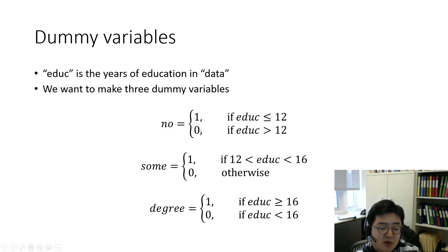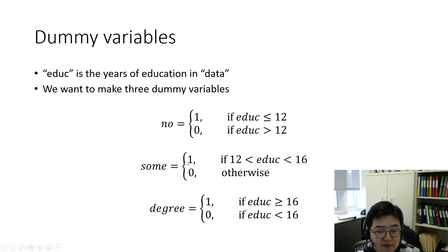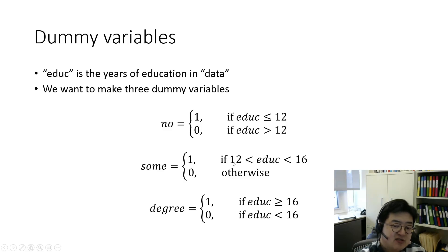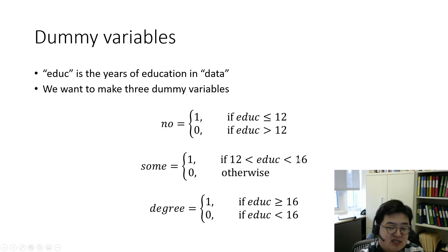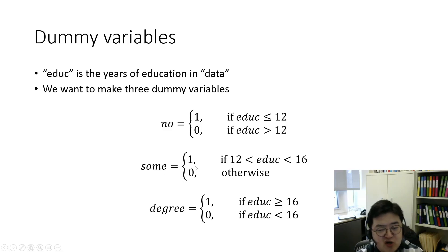There is another variable named 'some' — some college education. 'Some' takes one if education is strictly greater than 12 but did not complete a full degree. So 16 means four-year college education, but this group took one, two, or three years of college and could not receive a degree.